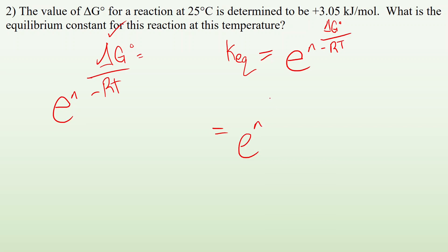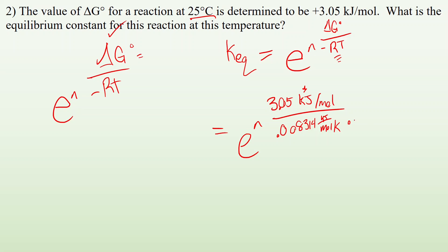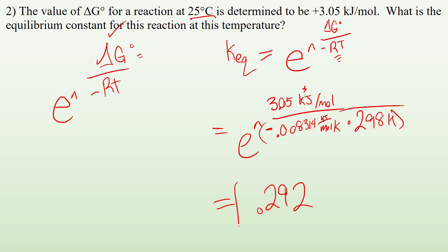Plugging in: delta G0 is positive 305 kilojoules per mole. For R, I want kilojoules, so instead of 8.314 joules per mole kelvin, I use 0.008314 kilojoules per mole kelvin. Temperature must be in kelvin: 25°C is 298 K. When I plug and chug — don't forget the negative sign in the exponent — I end up with approximately 0.292 as my final answer for KEQ.